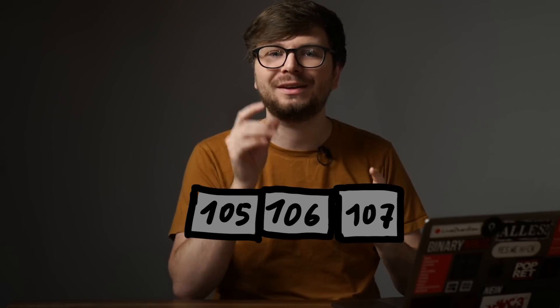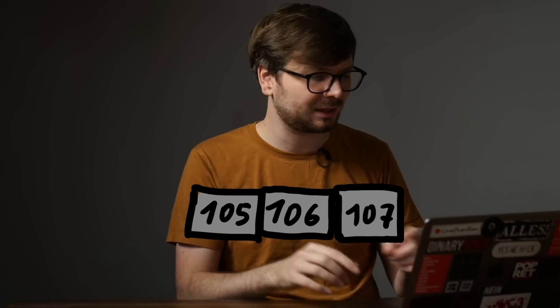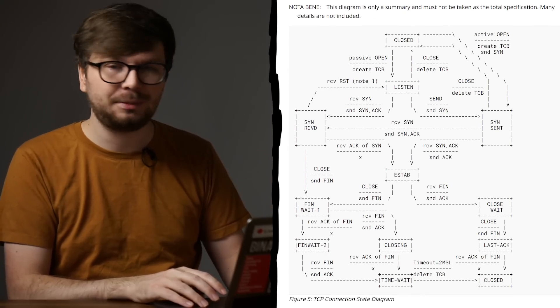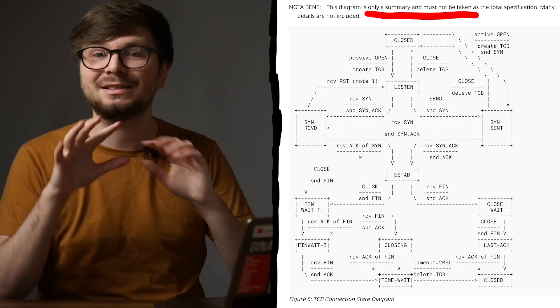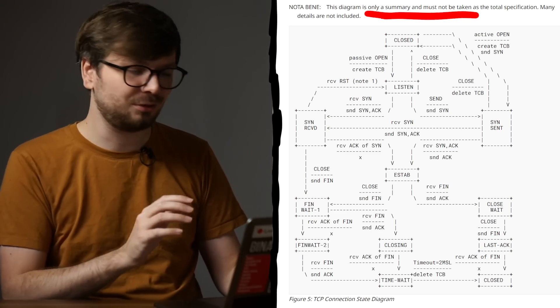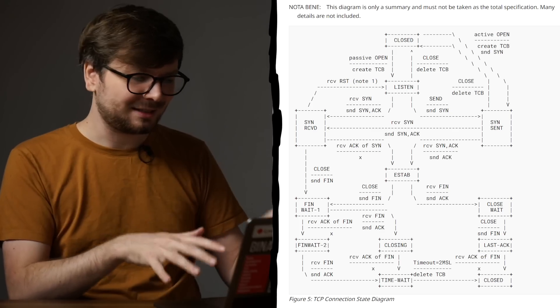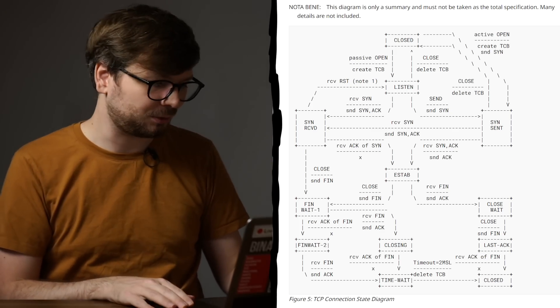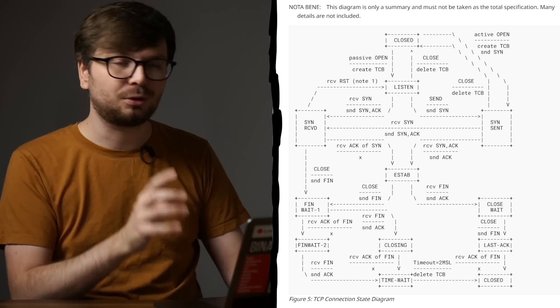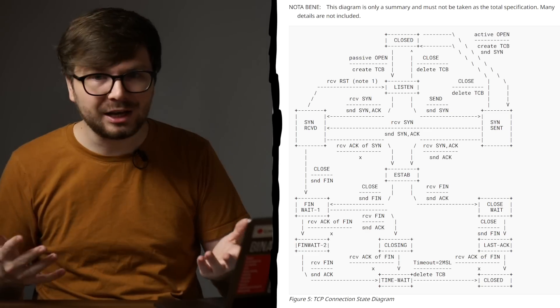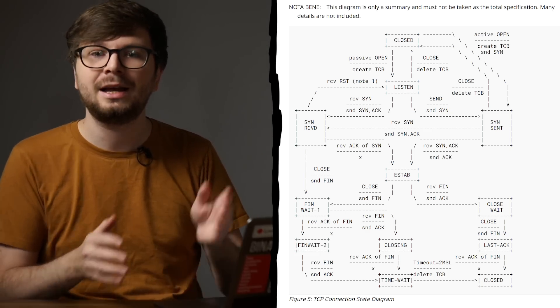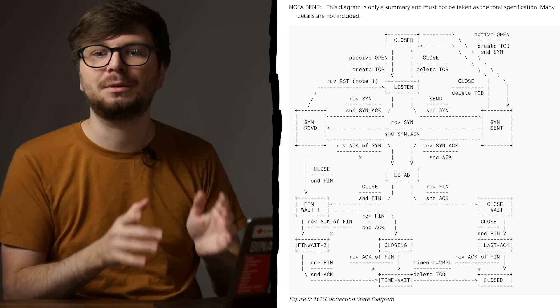TCP requires a very detailed description of exactly how each system has to behave. Here in the RFC is for example also a TCP connection state diagram. However, this diagram is only a summary and must not be taken as a total specification — many details are not included. I know this looks really complex, and I would not want to implement the TCP protocol myself, but you can see here what a protocol really is: a computer protocol is a collection of rules, definitions, and specifications of how systems can communicate with each other. And each protocol tries to solve specific problems of communication. Of course if you cannot find a suitable protocol for you, you could theoretically always invent your own.